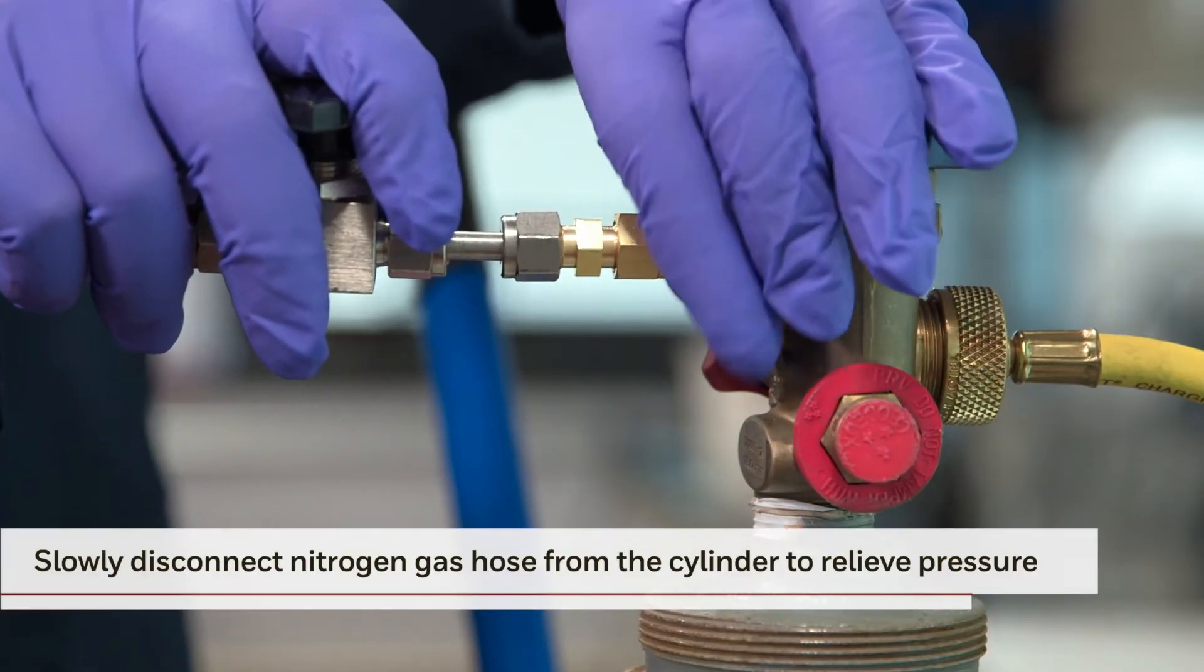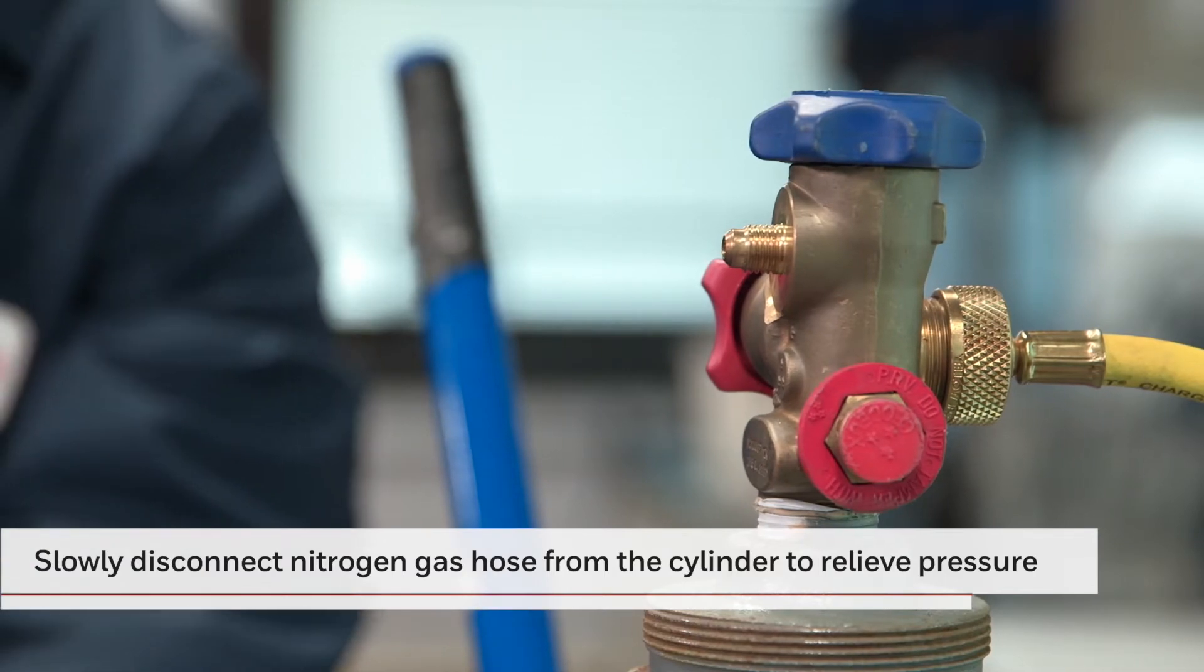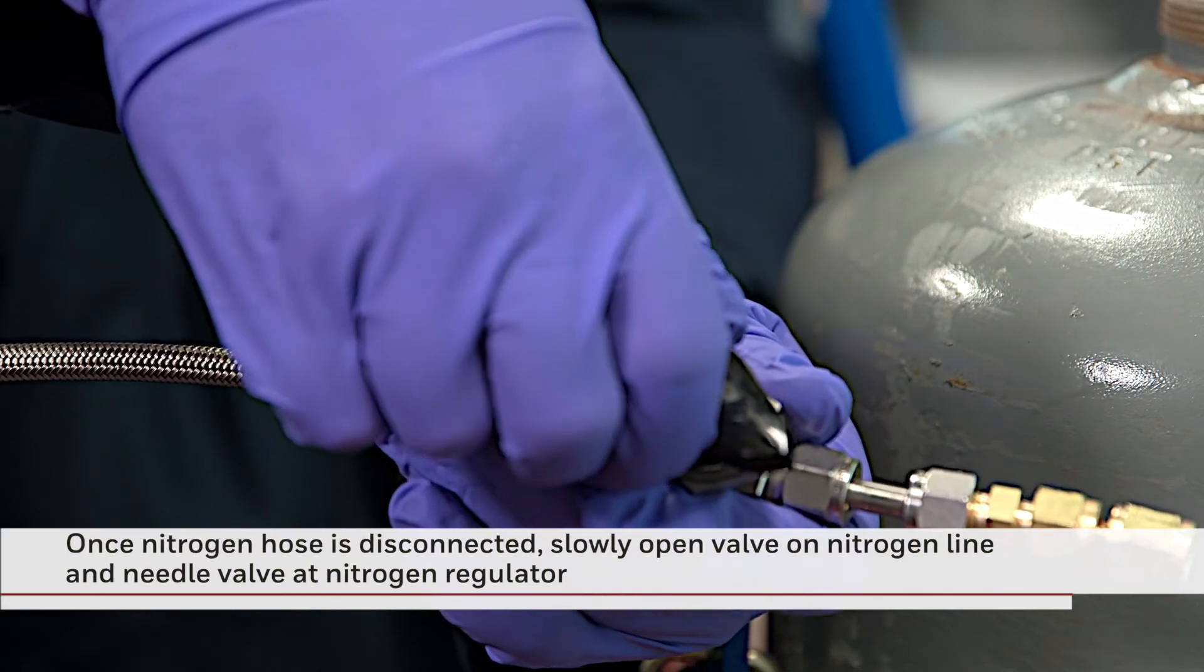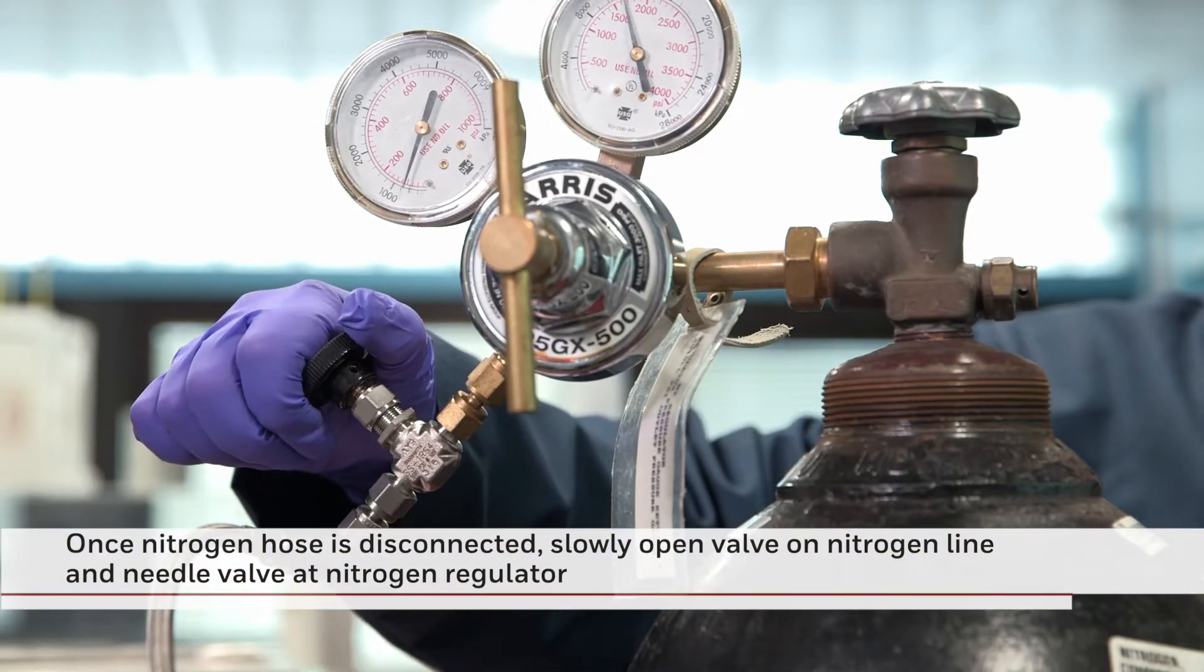Next, slowly and carefully disconnect the nitrogen gas hose from the blowing agent cylinder to relieve pressure. Finally, once the nitrogen hose is disconnected, slowly open the valve on the nitrogen gas line and the needle valve at the nitrogen regulator to relieve pressure.